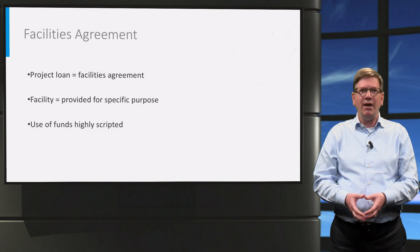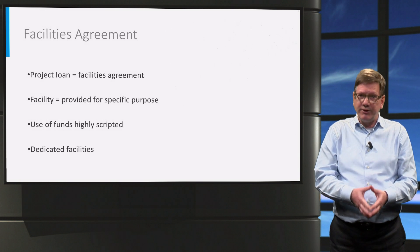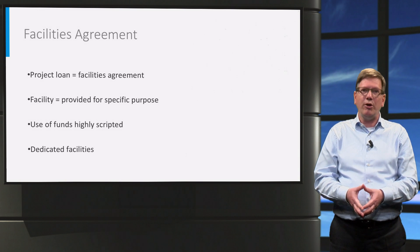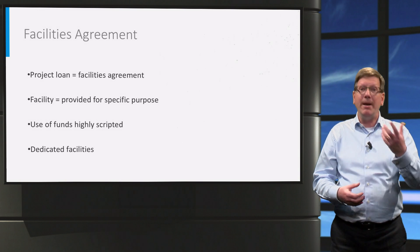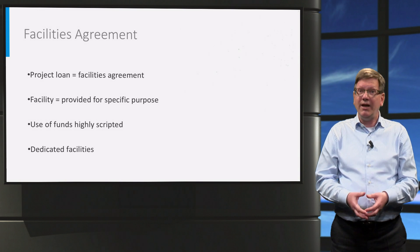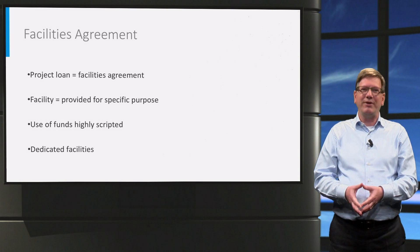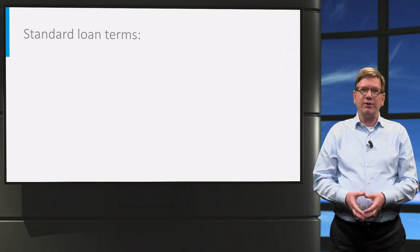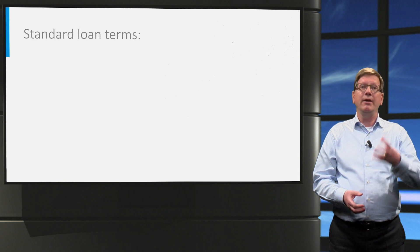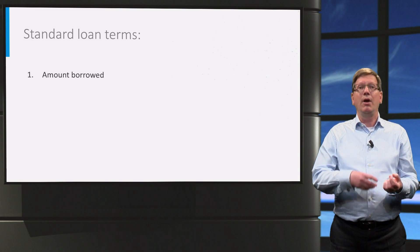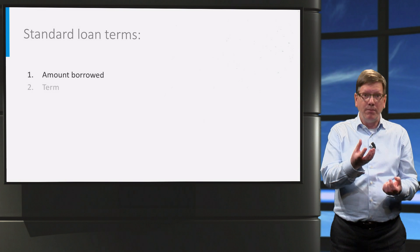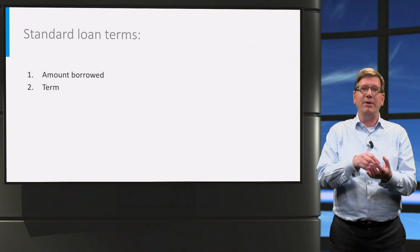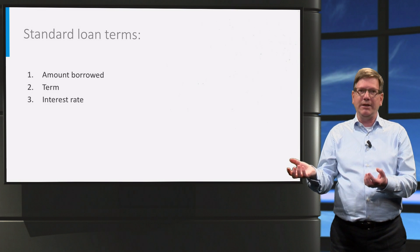In a project financing you have different facilities, each destined for the funding of a very specific purpose. There may be an O&M facility, for example. Like any loan agreement, the facilities agreement will define the amount to be borrowed, the term — this is the date or the various dates that the loan needs to be repaid — and the interest rate.